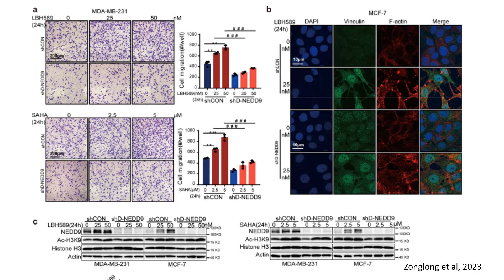This slide investigates the role of NET9 and how its expression and activity are influenced by LBH589 and Saha, with a focus on triple-negative breast cancer (TNBC). In panel A, the impact of LBH589 and Saha on cell migration is assessed using a transwell migration assay in MDA-MB231 cells. Cells treated with HDAC inhibitors showed significantly increased migration compared to controls; however, this effect is strongly reduced when NET9 is knocked down. The quantification confirms that NET9 plays a critical role in HDAC inhibitor-mediated migration enhancement.